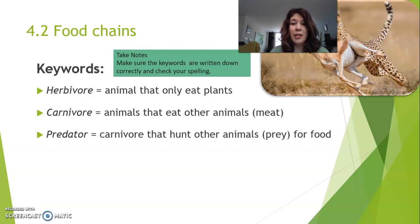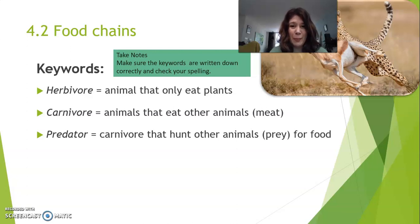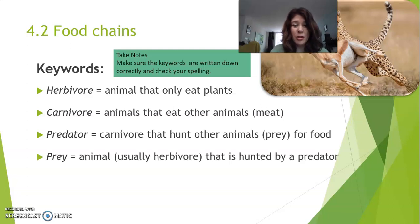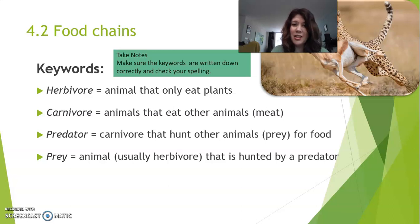Predator. A predator is a carnivore that hunts other animals for food. The other animals are then called prey. The Dutch translation of predator is rovdeer. Prey are animals, usually herbivores, that are hunted by the predator. Prey in Dutch is prooi.